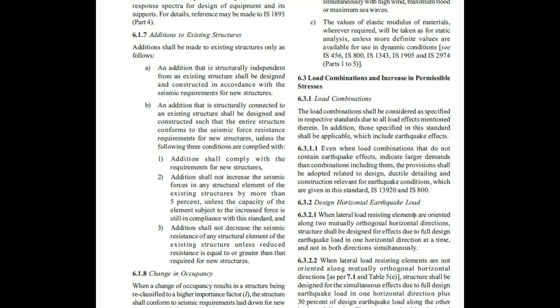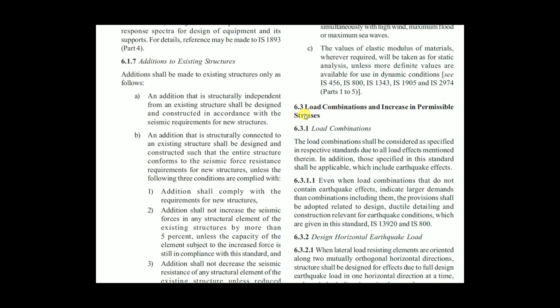In IS 1893:2016, clause 6.3 is specifically for load combinations. It states: the load combinations shall be considered as specified in respective standards due to all load effects mentioned therein. In addition, those specified in this standard shall be applicable, which includes earthquake effects. IS 456:2000 will have specific load cases, and in addition to those we need to consider earthquake effects.